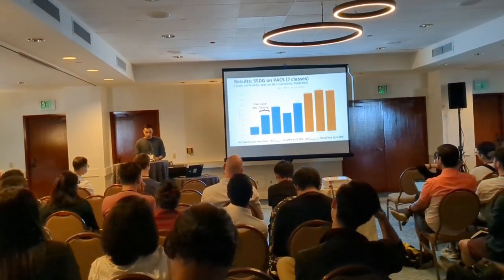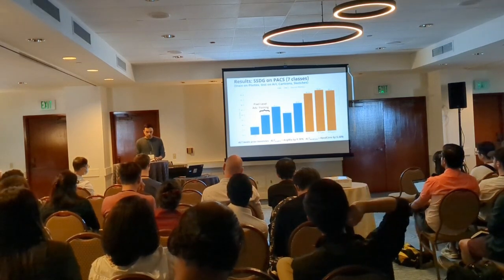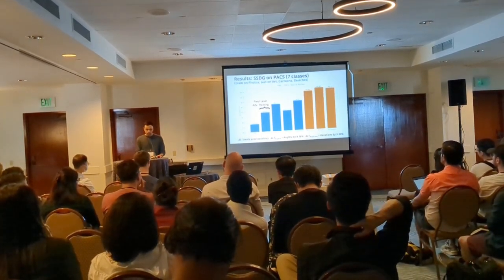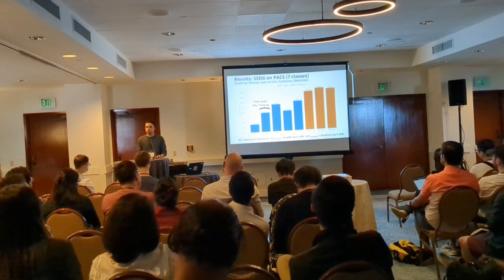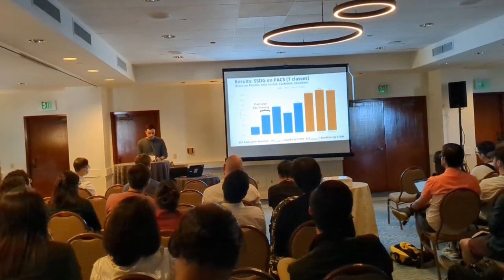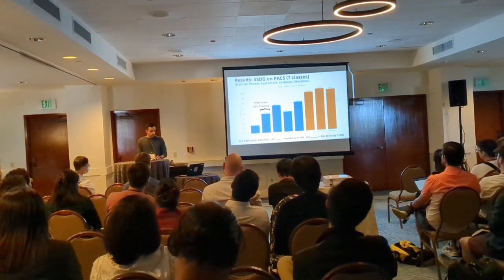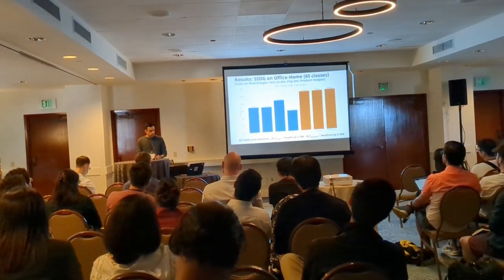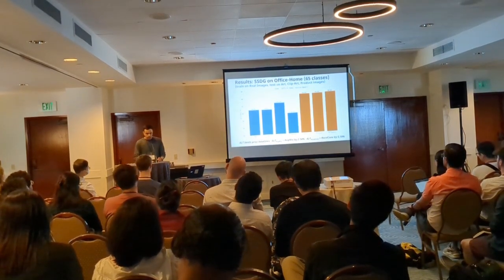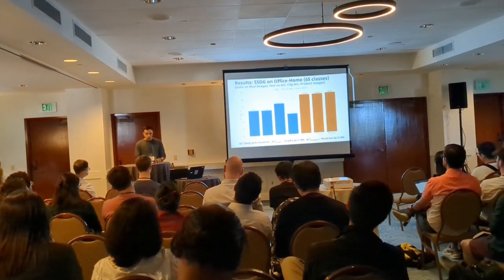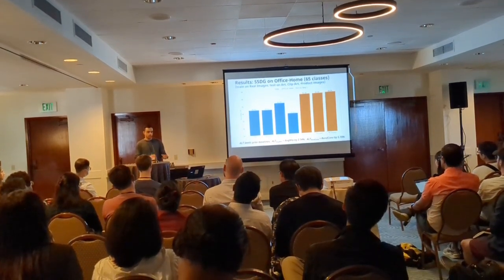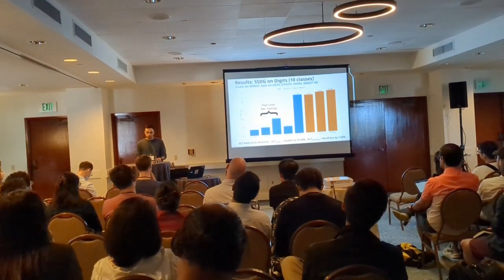Here are the results on PAX. ALT beats all previous baselines and is especially stronger than pixel-level adversarial training. All three variants of ALT are better than previous baselines. Similar strong results are obtained on Office Home, where ALT is state-of-the-art and also boosts the performance of AugMix and RankConf. Comparing AugMix versus ALT plus AugMix, you'll see a big jump.